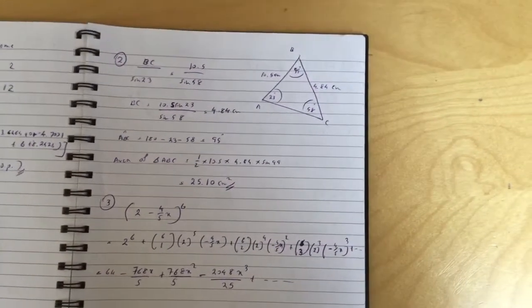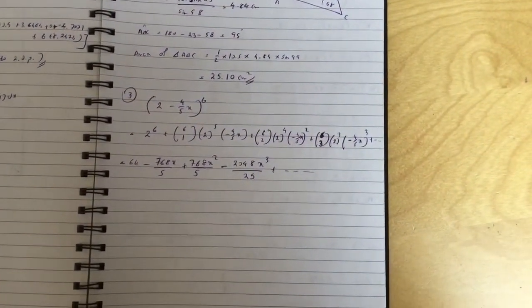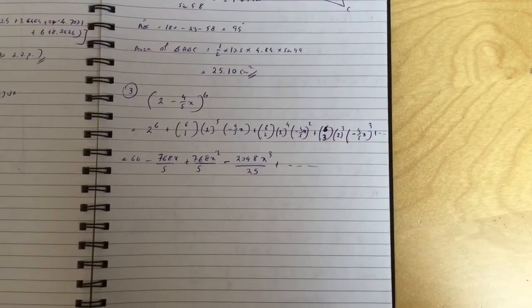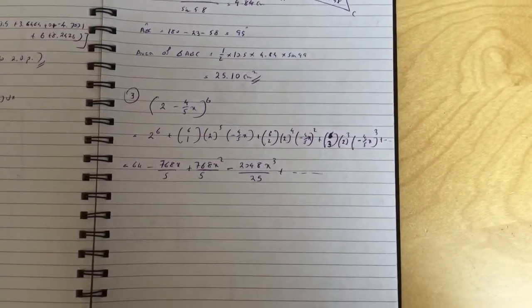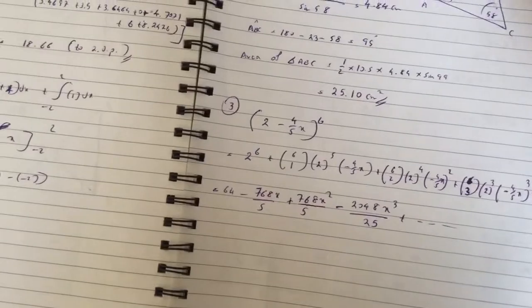Question three is a basic binomial expansion, and you get these values if you do it correctly. Okay, and question four...